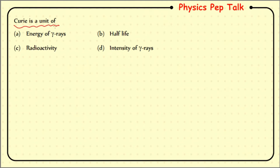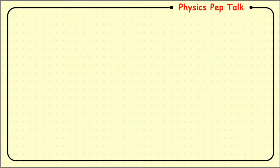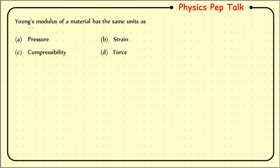Let us look into the next question: Curie is the unit of what? Curie is the unit of radioactivity. Therefore option C is the correct answer for this question.